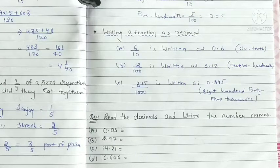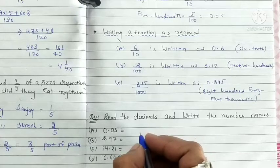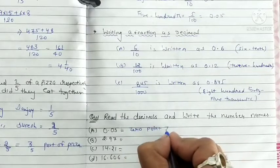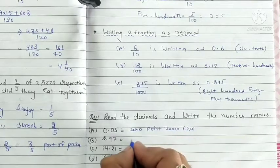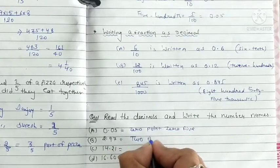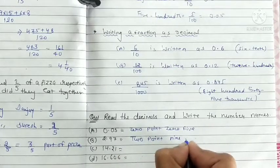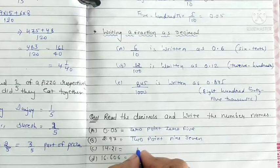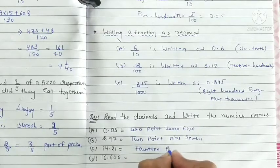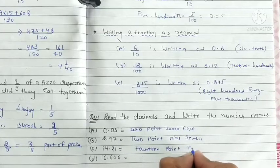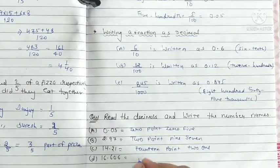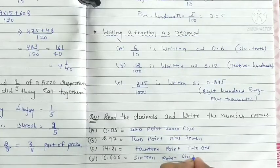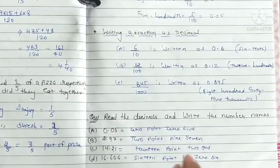Now start some important questions. Read the decimals and write the number names. First is 0.05. Next, 2.971. Fourteen point two one, and last sixteen point zero six zero.